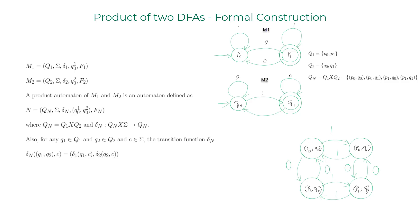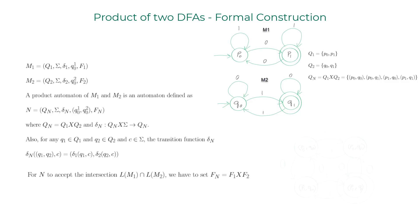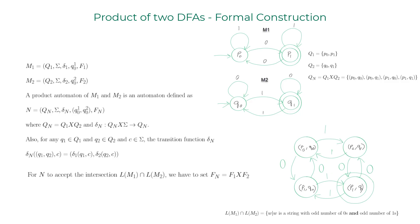Now we have everything except the final states. For DFA N to accept the intersection language of m1 and m2, we set the final states as the Cartesian product of F1 and F2. In this example, each machine has one accept state, so we get the single pair (p1, q1) as the accept state. This machine accepts the intersection language of m1 and m2.